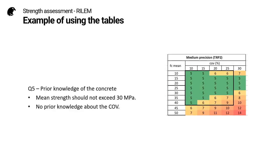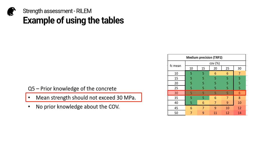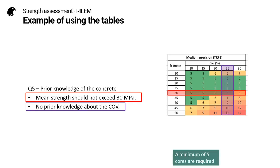Question 5 is about prior knowledge of the concrete. So it could be that we know the mean strength should not exceed 30 MPa. If we don't have any information about the coefficient of variation, we take a high one. And in this case, we can see that a minimum of five cores are required.